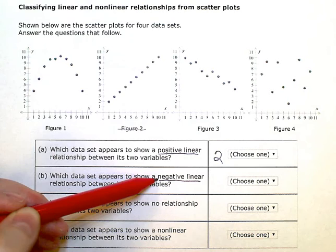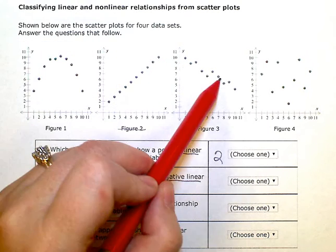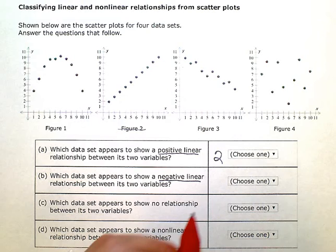So that would be this one, right? Falls into basically a linear pattern with a negative slope. So this would be figure three.